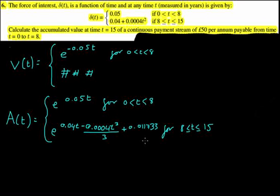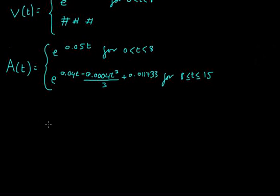Okay, so now let's get started. So what we've got to do is we've got the accumulated value at time t equals 15. We've just got to find the net present value to start with of these 50 payments each year for the first 8 years. Net present value is discounted all back to today's date. And then we can accumulate it over 15 years using our delta t, which we're going to use this bit for. All right, so how do we find the present value?